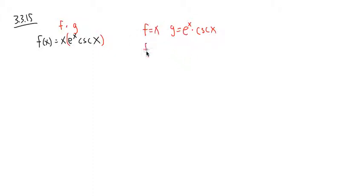And to differentiate f, that's easy, because the derivative of x is equal to 1. But to differentiate g right here, once again, this is e to the x times cosecant x. So we have to use another product rule.